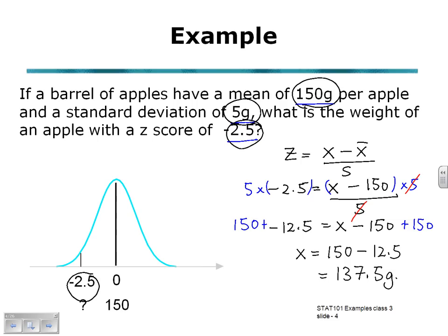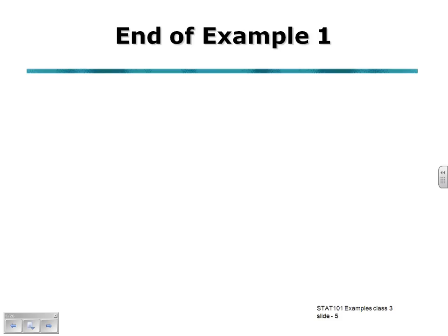This is smaller than the mean which is what we would expect from this type of question where we've got a negative Z-score. And that is the end of example one.